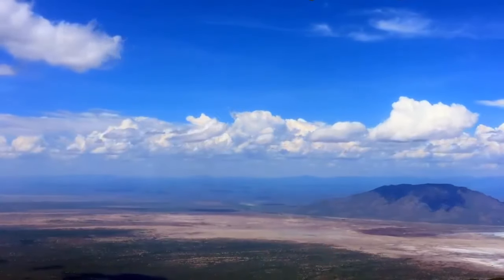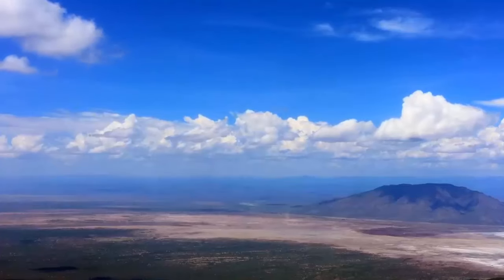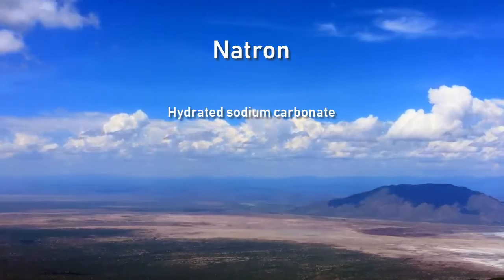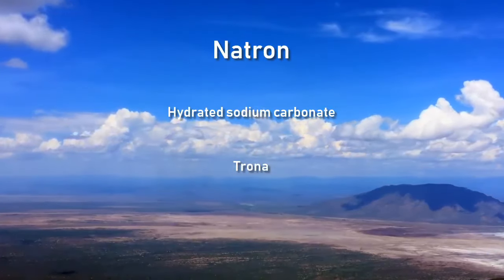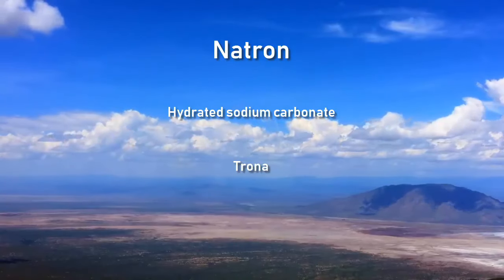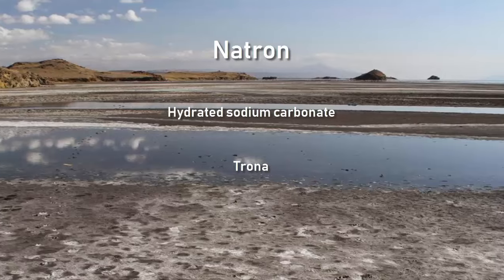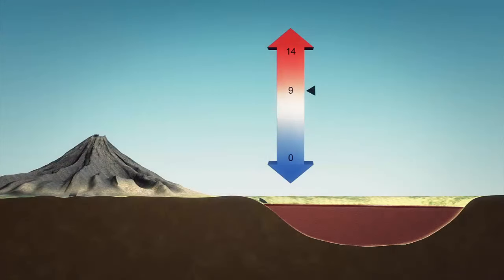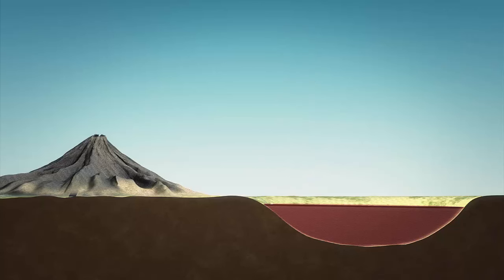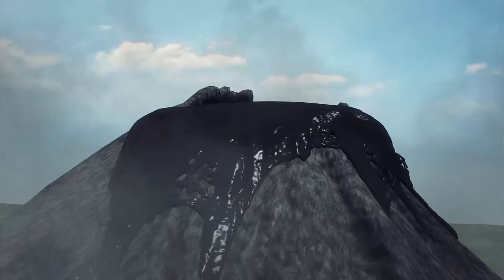Due to high levels of evaporation, Natron, which consists of hydrated sodium carbonate, and Trona, which consists of hydrated carbonate and bicarbonate of sodium, are left behind. This causes the alkalinity of the lake to reach a pH of greater than 12. Also from the surrounding hills, sodium carbonate and other minerals flow into the lake. These factors allow the lake to concentrate into a caustic alkaline brine.